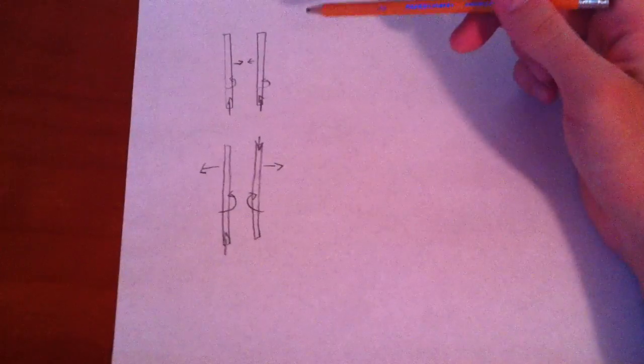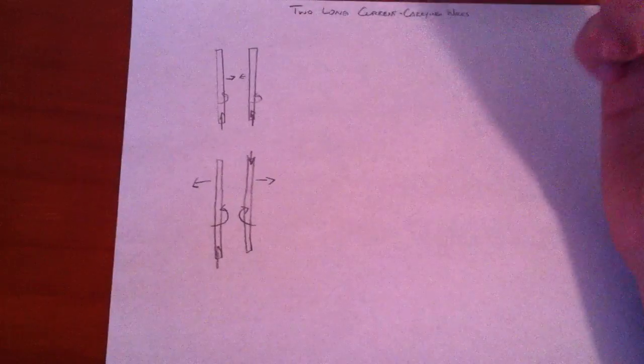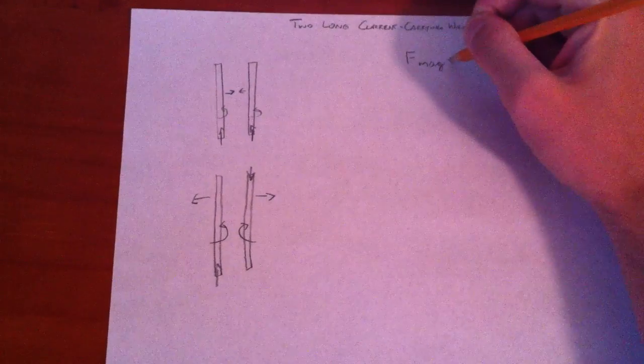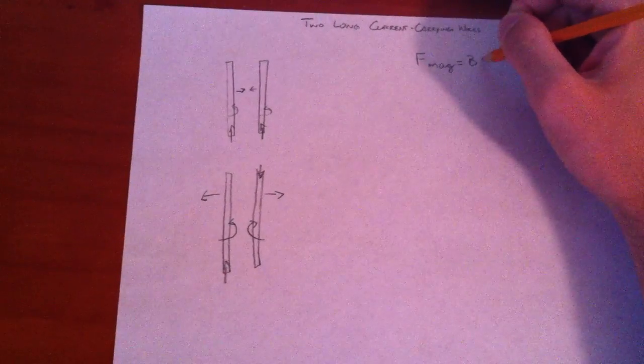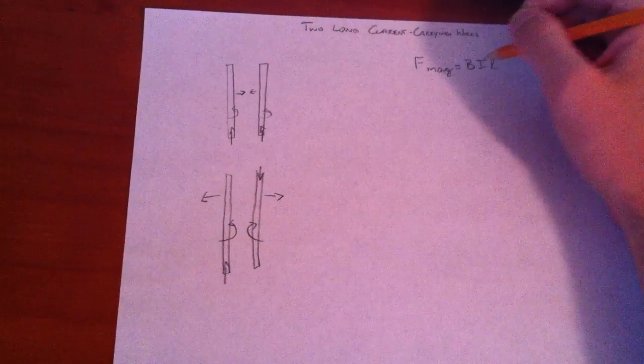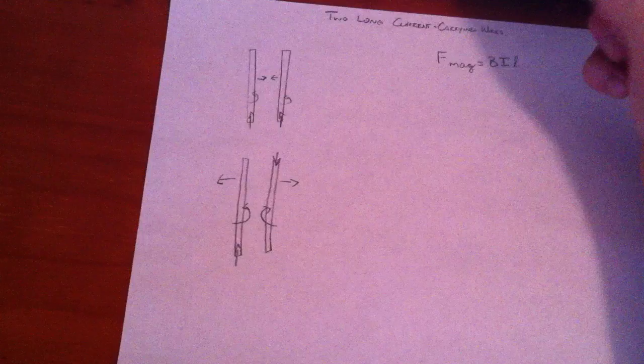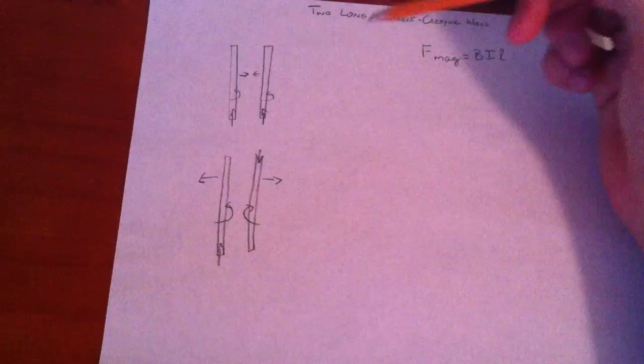We're going to find the force of attraction between these two wires. So we use magnetic force equals BIL, where B is the magnetic field, I is the current, L is the length of each wire.